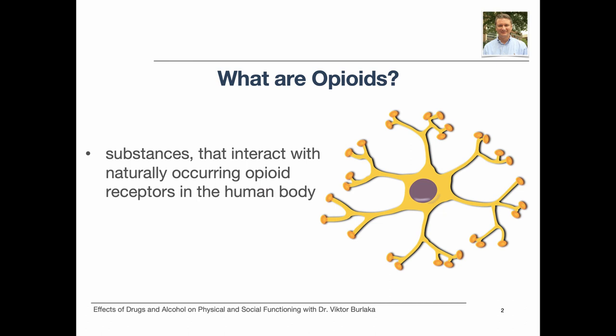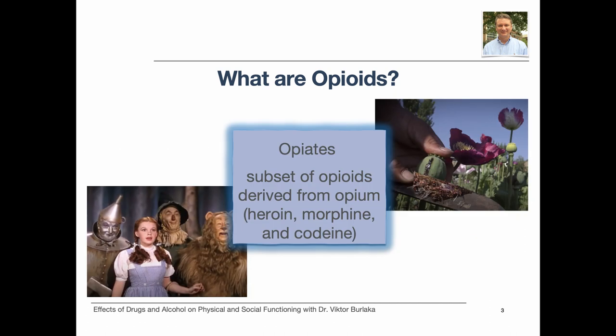What are opioids? Opioids are substances that interact with naturally occurring opioid receptors in the human body and are either derived from opium or manufactured synthetically. Opiates are a subset of opioids derived from opium. Substances such as heroin, morphine, and codeine are produced from the seeds or what is extracted as a resin from the opium poppy.